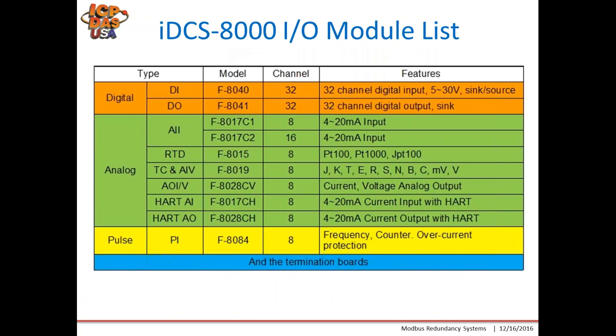The IDCS slot IO modules are listed here. We have these plus many more coming out shortly. We have everything from digital IO for DI and DO, and for analog types we have AI, RTD, thermocouple, analog inputs, and analog outputs. We also have a HART communication board and pulse and frequency counters.